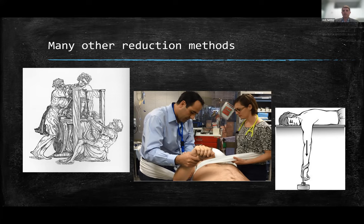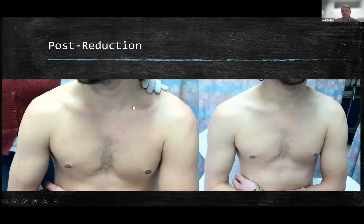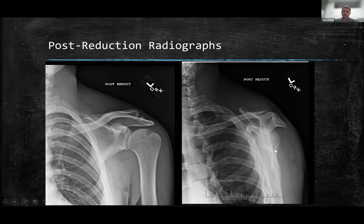The key is just making sure you're moving one bone at a time. Here are the post-reduction pictures — that sulcus sign is gone and he's a lot happier. You can get some post-reduction films. Documentation is key in these. If you can get post-reduction films and document neurovascular status, that's helpful. You can see the humeral head is right in the middle of the scapula on the glenoid where it should be.